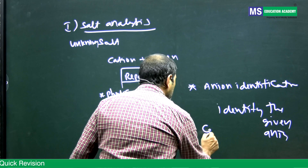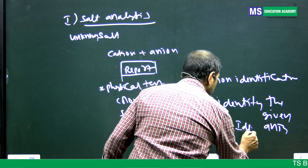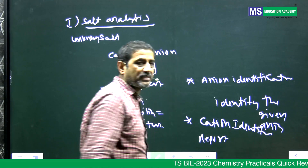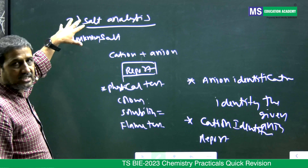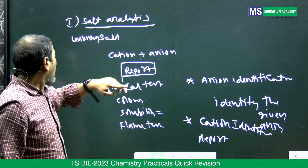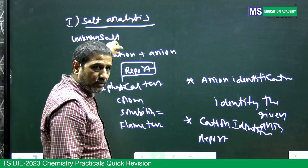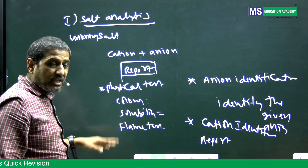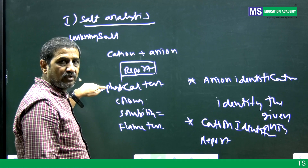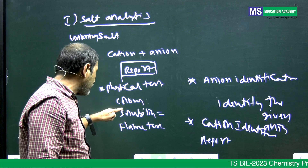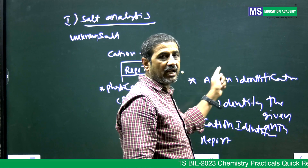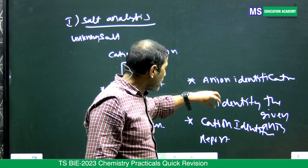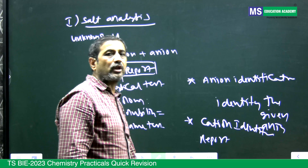Phase three is cation identification. After identifying the cation, you submit a report stating what cation and what anion are present in the given salt. So the procedure has three stages: physical tests (color, solubility, flame test), then anion identification, then cation identification, and finally you report the salt.